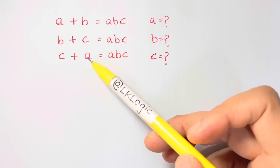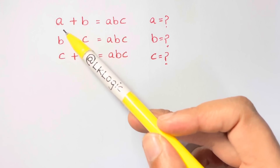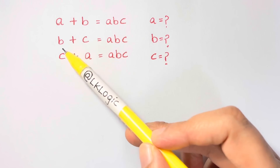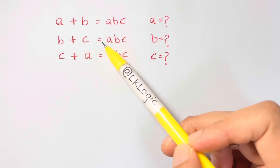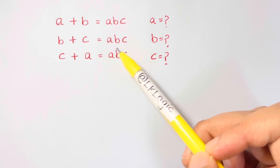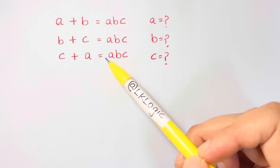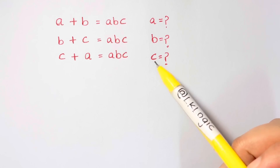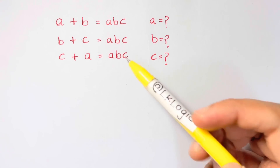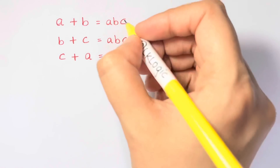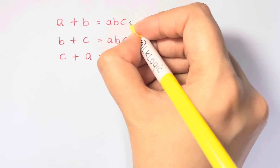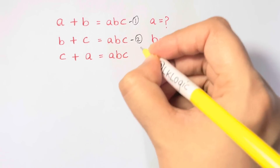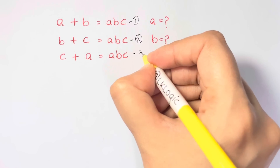Hi guys, I have a wonderful question for you: a plus b equals abc, b plus c equals abc, and c plus a also equals abc. What is the value of a, b, and c? Let's name these equations as one, two, and three so that it is easier for us to work with.